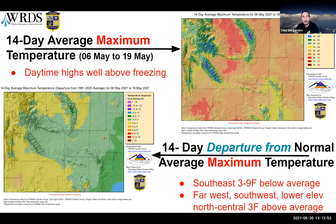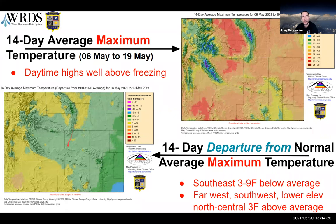Looking at maximum temperature, daytime temps are well above the freezing mark. The departure from normal is about half and half. The southwest, west, and north central parts of the state are up to three degrees above average for daily maximum temperature over the two-week period. A large area in the central state — Fremont County, Hot Springs, parts of Washakie — is about three degrees below, and the eastern plains as well. In the far east and southeast, you're seeing six to nine degrees below normal in the very southeast, with a band going three to six degrees below normal.